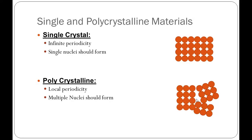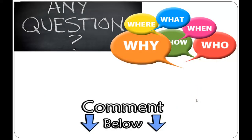In summary, this lecture covered the difference between crystalline and amorphous materials, how each forms, and the processes of nucleation and growth in detail. We examined the critical radius associated with nucleation — a critical radius must be obtained to form a stable nucleus and ensure further growth. Thank you very much; please leave comments if you have any questions or suggestions for topics you'd like me to discuss.